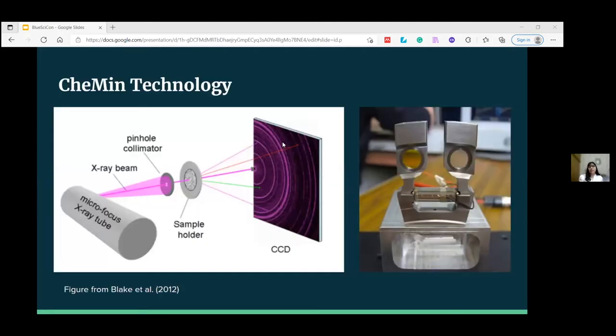Talking about the CheMin technology, how did it work? Curiosity delivered an aspirin-sized sample of fine soil to CheMin, which was placed in one of the windowed cells seen in the image on the right. You can see two circles - these were the cells where the sample was located.